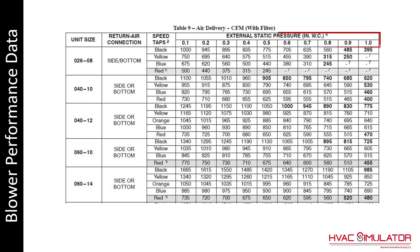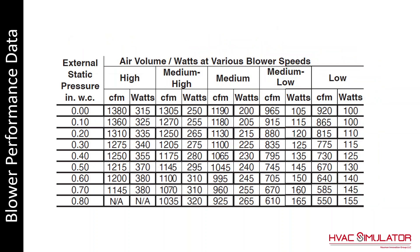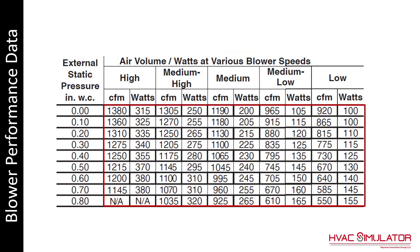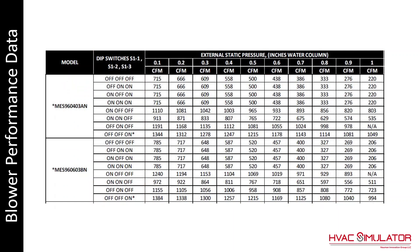External static pressure is shown on the top of this chart, and the blower speed taps are on the left, with the CFM values in the body. On another chart, the external static pressures are listed on the left column and the blower speeds on the top row, with CFM values in the body. Another manufacturer has external static pressure on top but uses dip switches to set the CFM, with CFM values in the body.